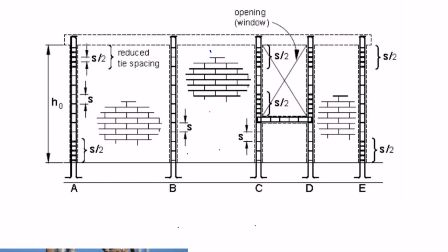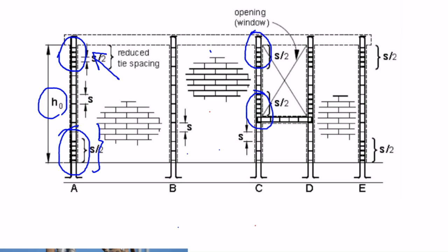Proper reinforcement of tie columns requires closely spaced ties at the top and bottom regions of tie columns — at approximately one-fifth or one-sixth of the overall floor height H. This closer spacing of ties is needed in high seismic zones such as zone 5 of India, and is not necessarily required in lower seismic zones. Usually, spacing of ties is on the order of 200 mm. Similar closer spacing is required at opening locations, because the expected cracks go to the bottom of the opening.